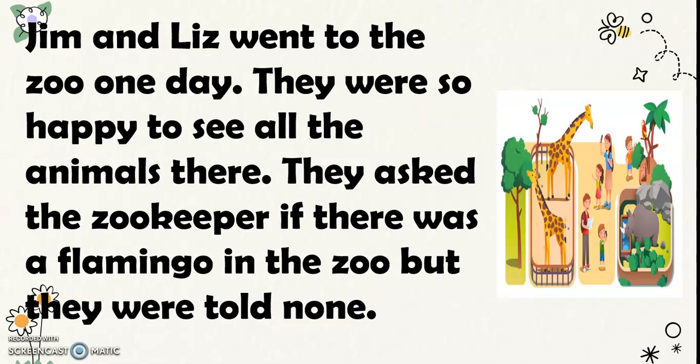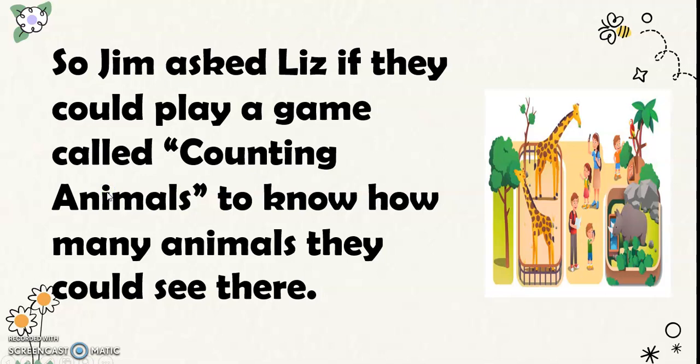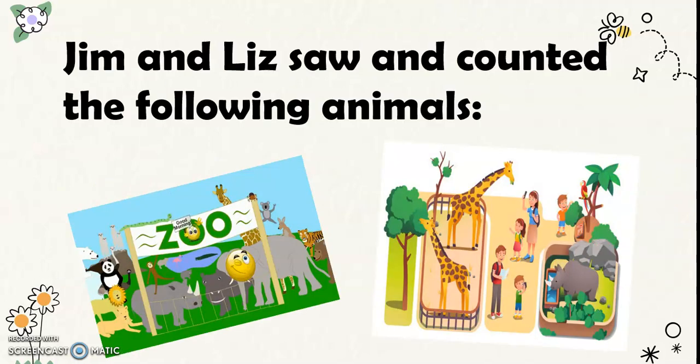They asked the zookeeper if there was a flamingo in the zoo, but they were told none. So, Jim asked Liz if they could play a game called Counting Animals to know how many animals they could see there. Jim and Liz saw and counted the following animals.